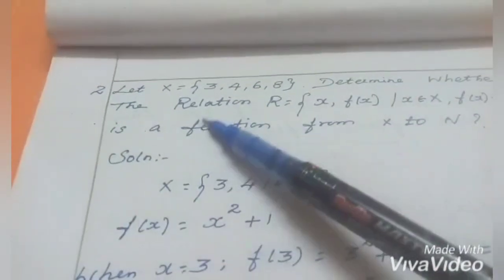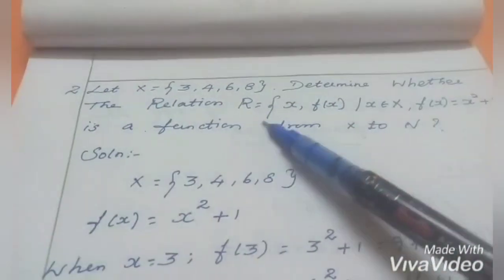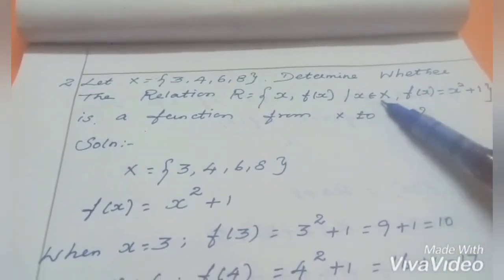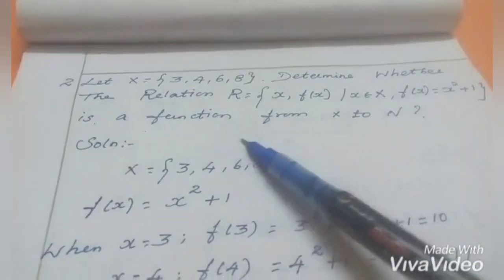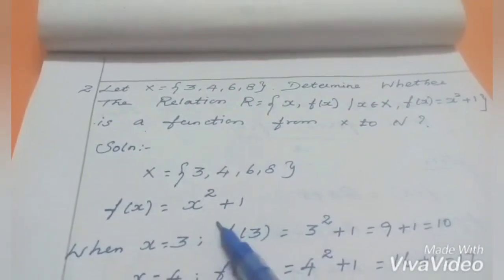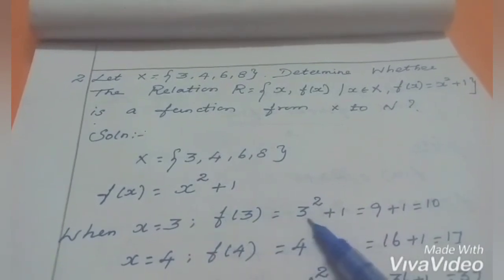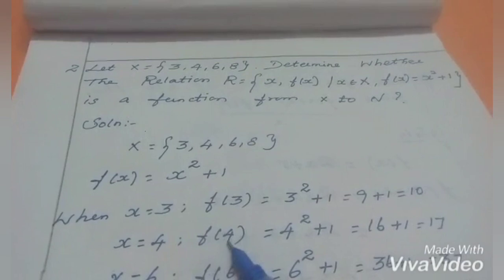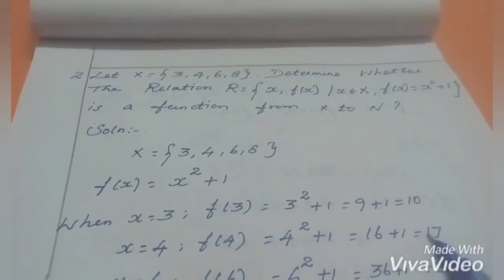Second question: let X = {3, 4, 6, 8}. Determine whether the relation R = {(x, f(x)) : x in X, f(x) = x² + 1} is a function from X to N. When x = 3: f(3) = 3² + 1 = 9 + 1 = 10. When x = 4: f(4) = 4² + 1 = 16 + 1 = 17.